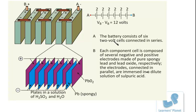A battery consists of six 2-volt cells connected in series, each generating a potential of 2 volts. Each cell consists of stacks of positive and negative plates. Each component cell is composed of several negative and positive electrodes made up of pure spongy lead and lead oxide respectively. The electrodes are connected in parallel and immersed in a dilute solution of sulfuric acid.